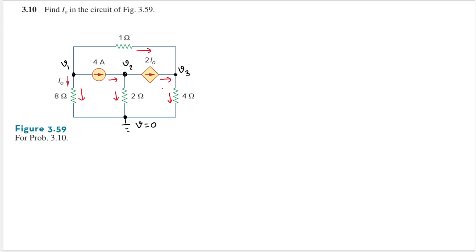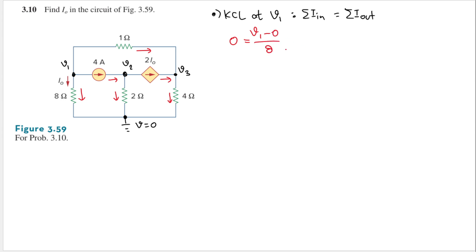Now we can do KCL at V1, KCL at V2, and KCL at V3. KCL states that the sum of currents going in equals the sum of currents going out. At V1, there is no current going in, so all are going out. The current going out through the 8 ohm resistor is V1 minus 0 divided by 8, plus the 4 ampere current source, plus the current V1 minus V3 divided by 1.